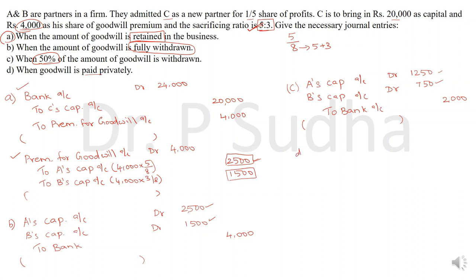For Situation D, goodwill is paid privately. As already explained, if goodwill is paid privately, no entry is needed — no entry will be given in the books at all.